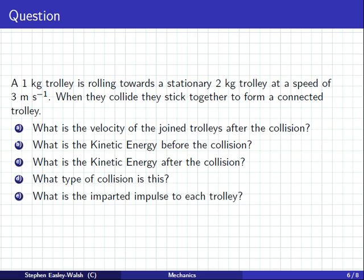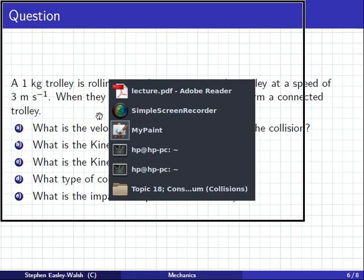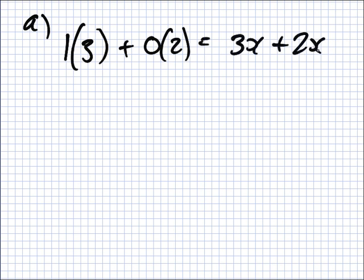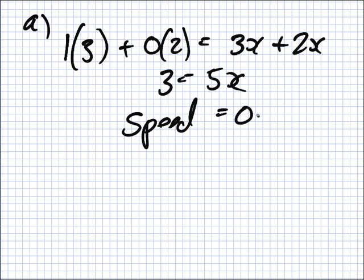So, give me the answer there. Three and two and five. Okay. I think I have the answer. Okay. I think you should have the first part done. So, M1, what do you say? One times three plus zero times two equals three X plus two X. Yeah? So, you have three equals five X. So, X, which is the speed, is equal to zero point six.